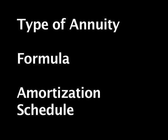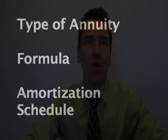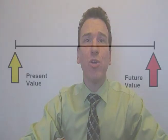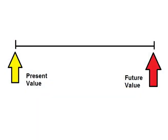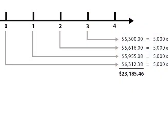An annuity is a series of equal payments made at regular intervals, such as a personal or mortgage loan. Like a unique amount, we can either calculate the present or the future value of such a series of payments, as this chart shows here.